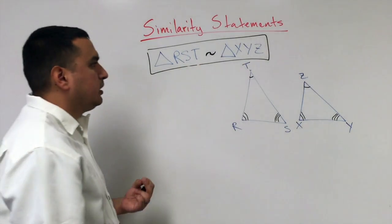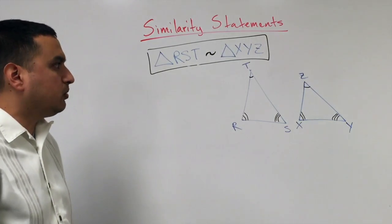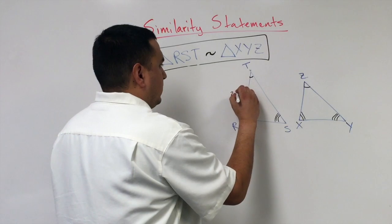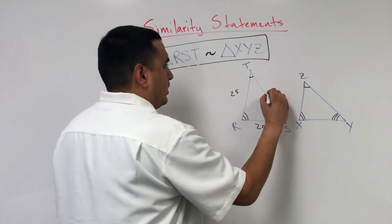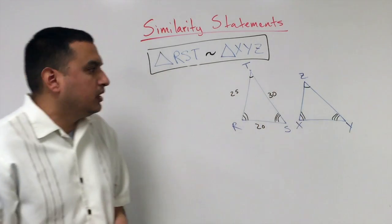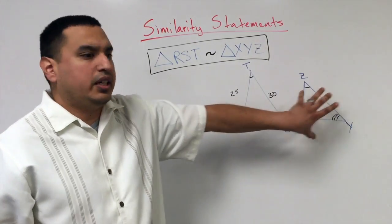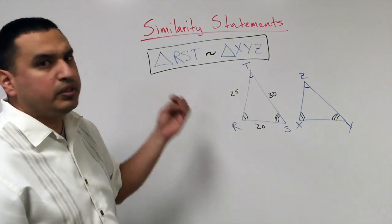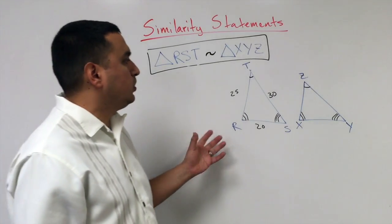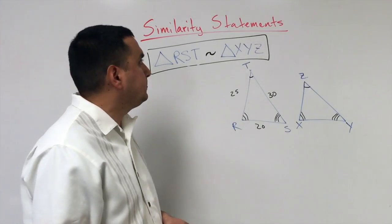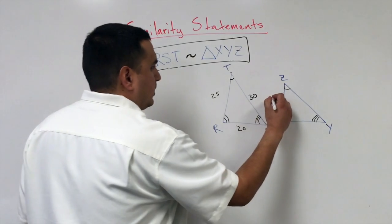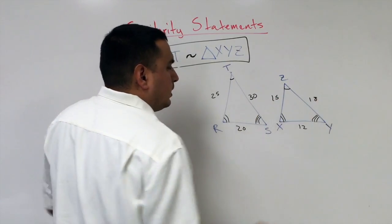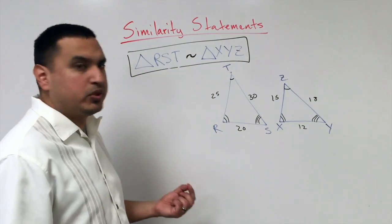But since they're similar, that means their sides are not equal. If this is 25, this is 20, and this is 30, then on this other shape these numbers are going to be different, but they're going to be proportional to the other sides. Let's say this is 15, this is 12, and this is 18. Because they're proportional, I can set up some ratios.